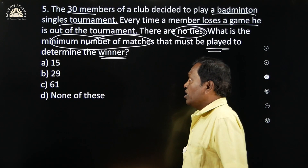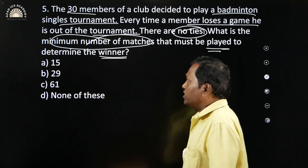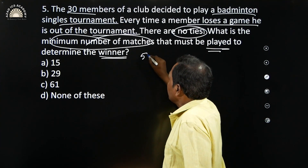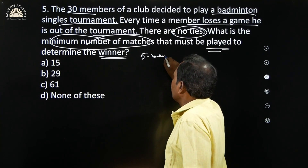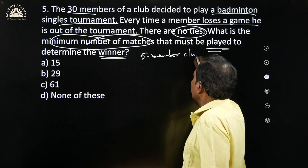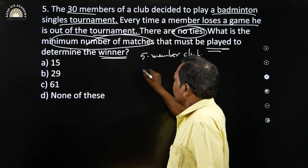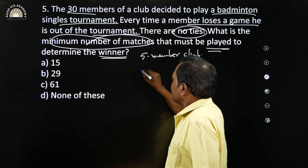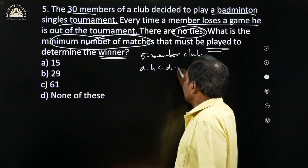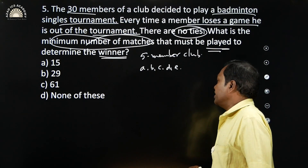We do not know. So let us take things in a logical sense. There are five members in a club. Let us name them A, B, C, D, and E.